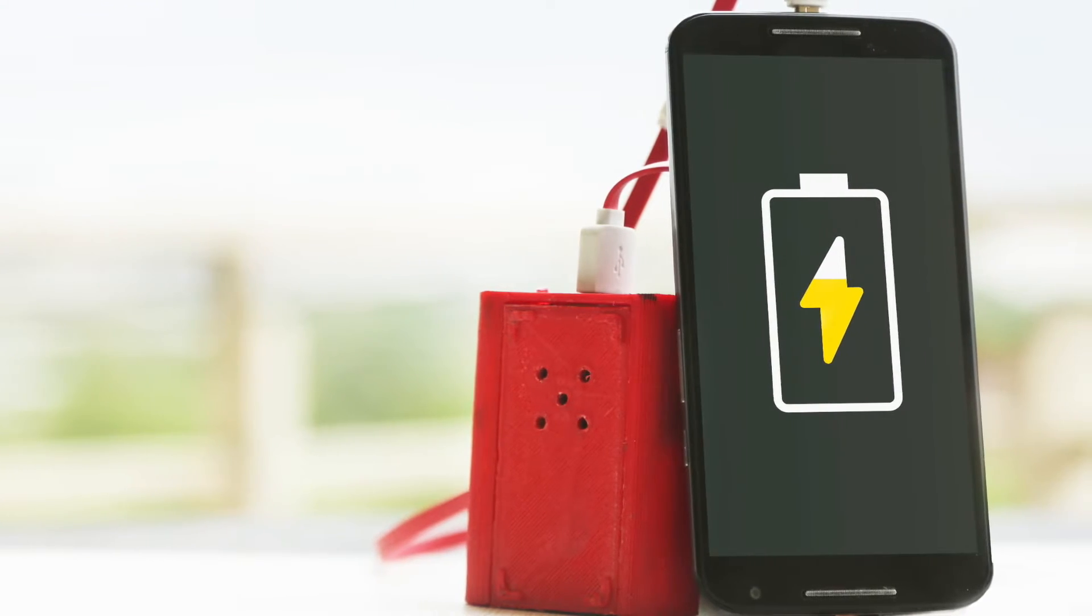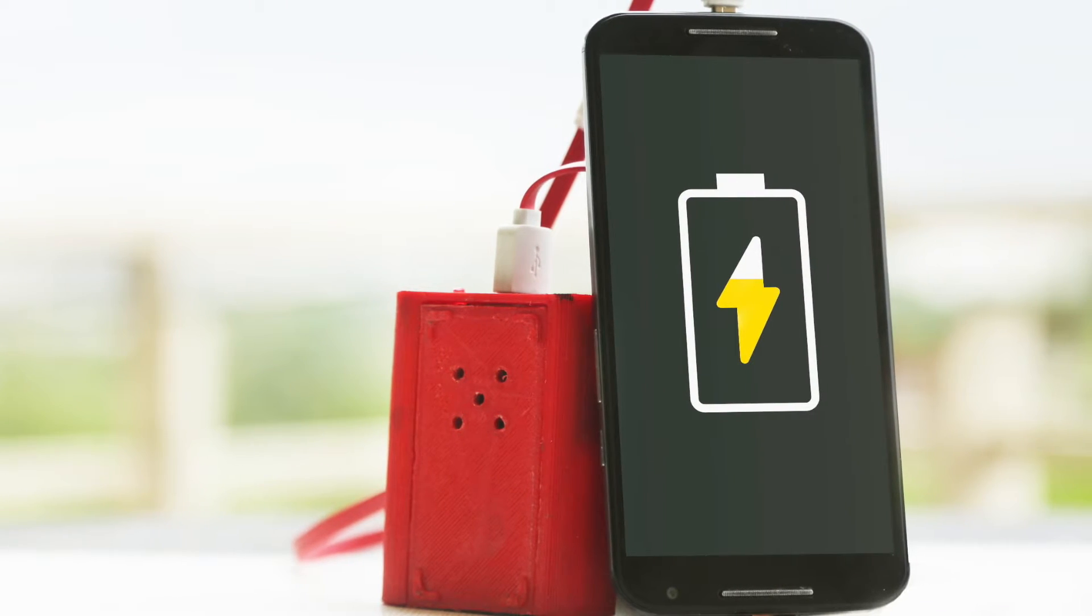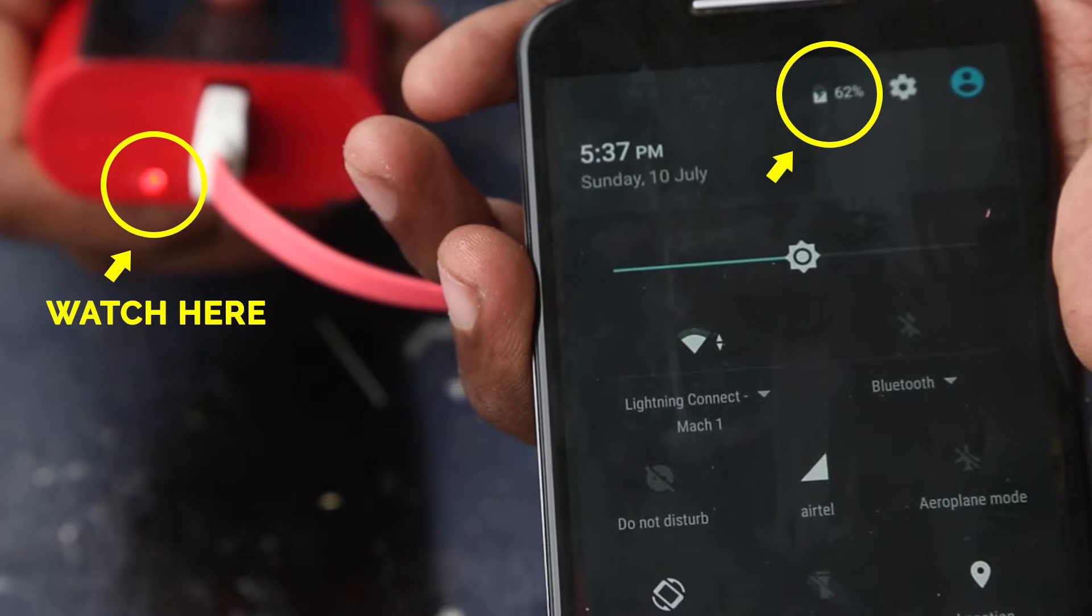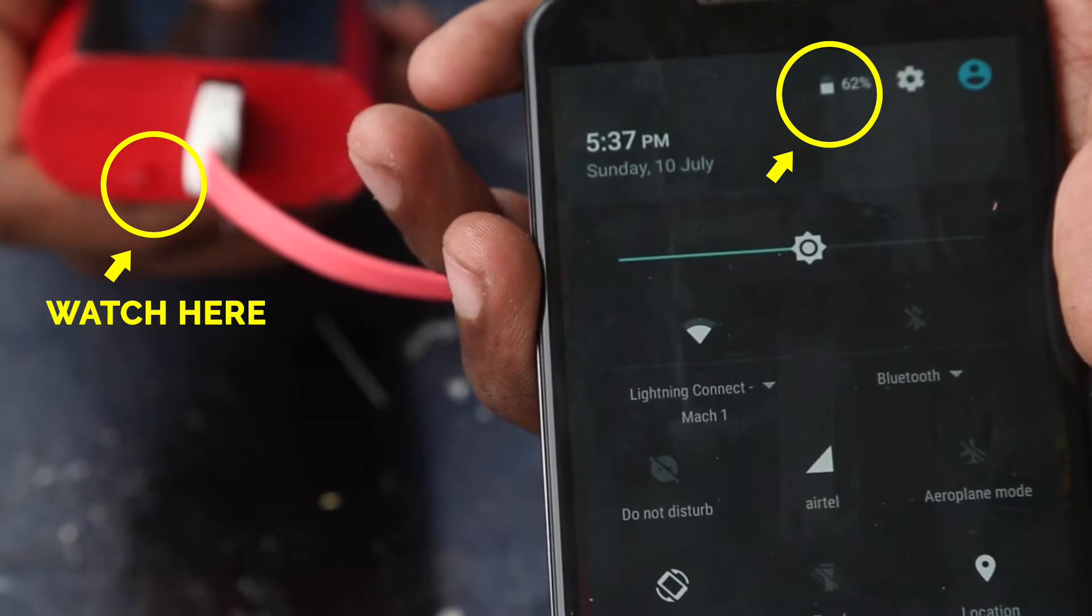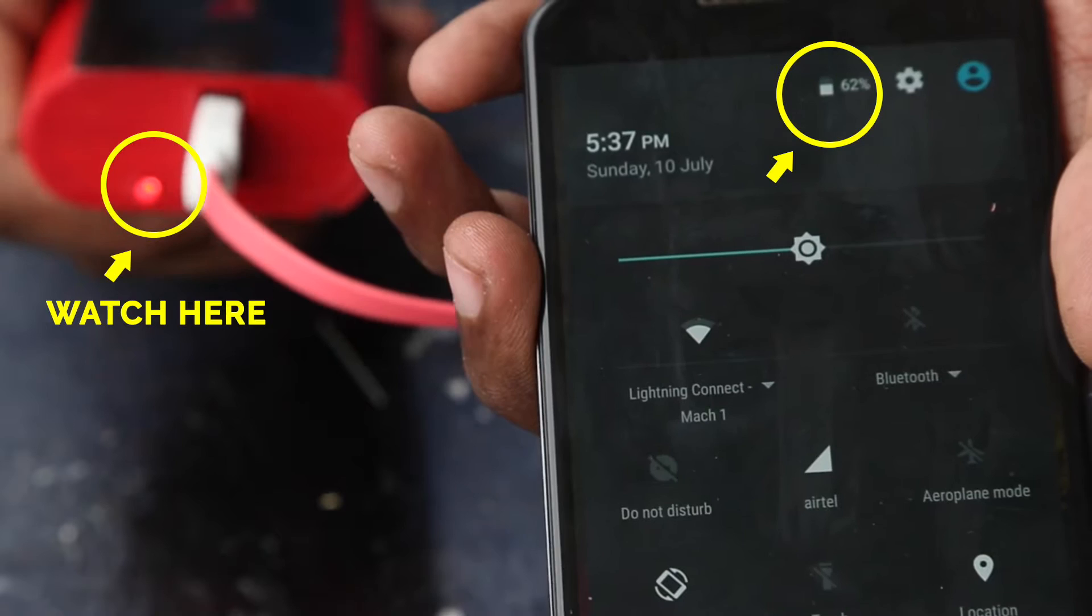This week I made this power bank to charge my mobile on the go. It's packed with 4200 mA of power and I'm going to show you how I made this. So stick around.